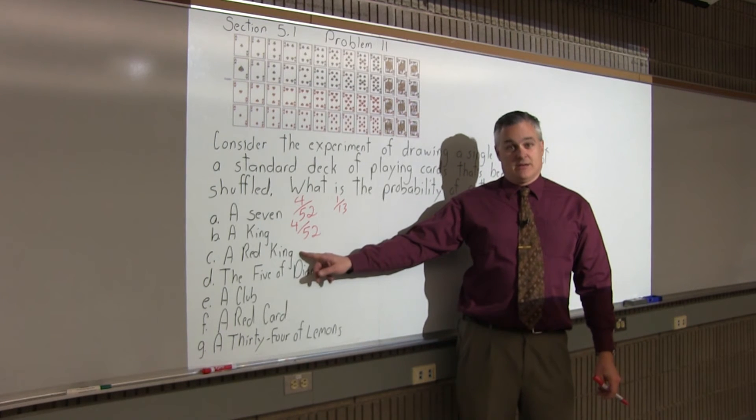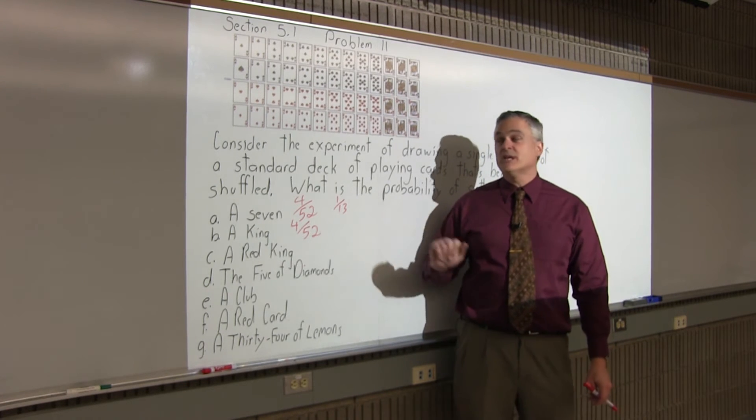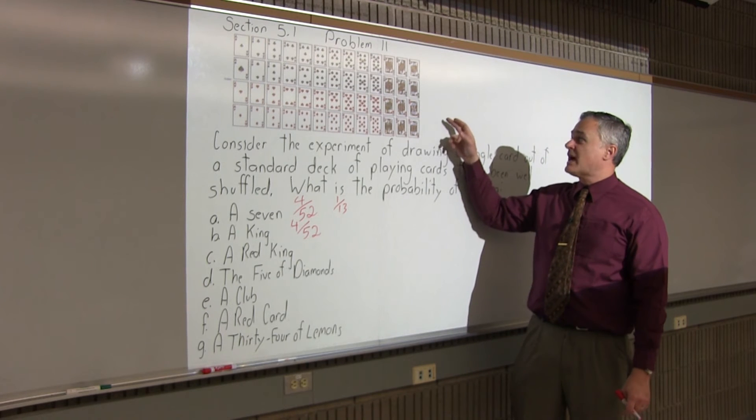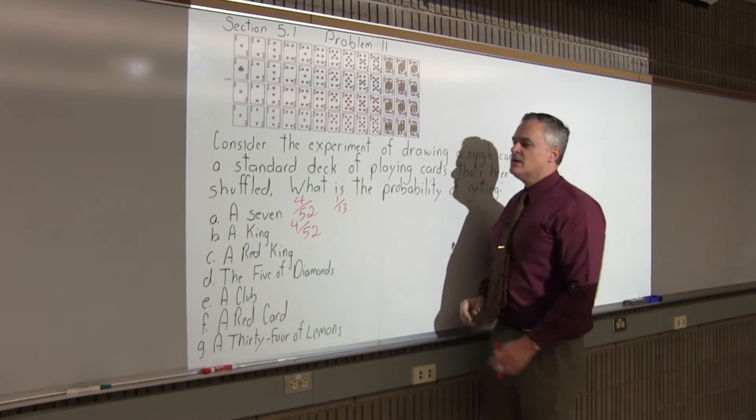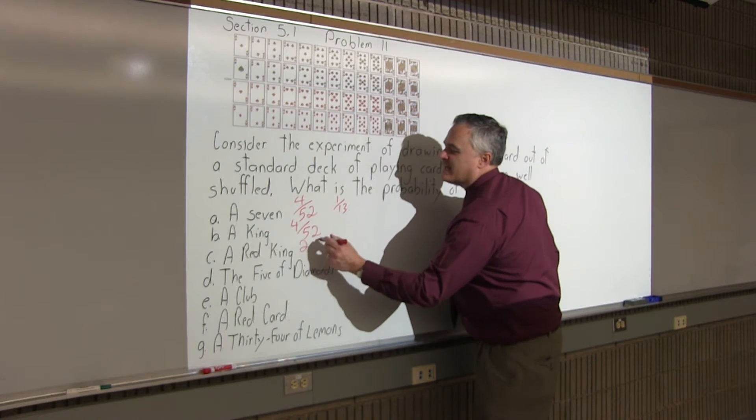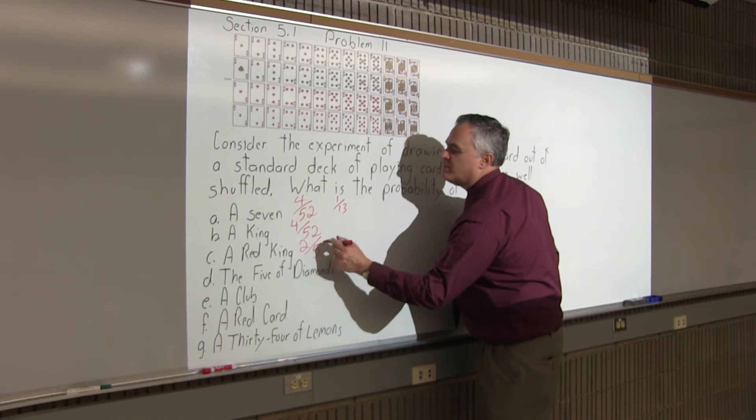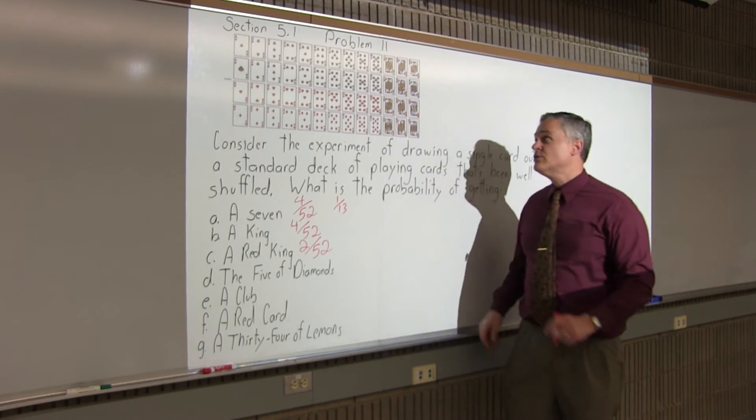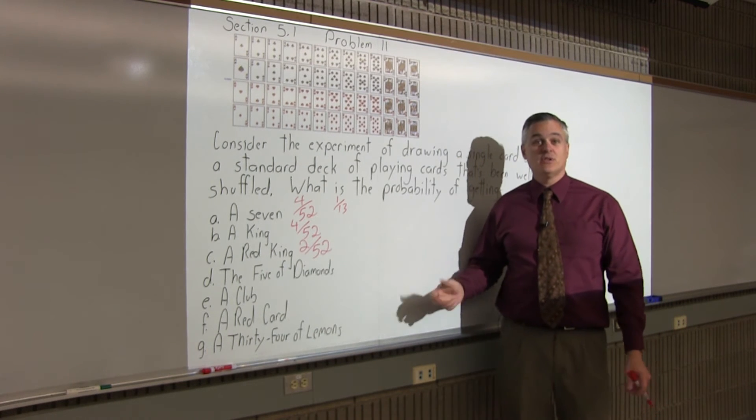A red king. So, there are two kings in the deck that are red. The king of diamonds and king of hearts are red. The other two kings are black. So, the probability of getting a red king would be 2 over 52. There are two red kings in the deck out of 52 cards altogether.